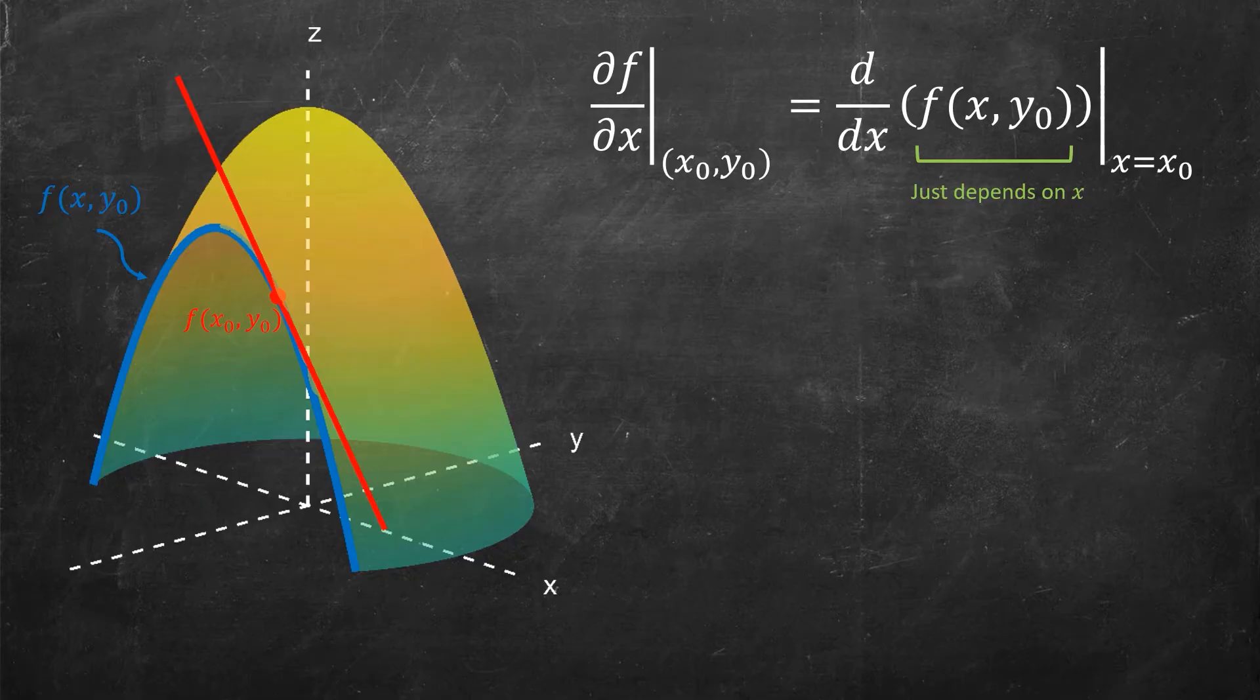And so I can take the derivative using the old d/dx notation we used in one dimension, it perfectly applies. Finally, they used the long vertical bar to evaluate it at x equal to x₀. So the idea is that I have defined the partial derivative of a multi-variable thing to simply be the original single variable derivative when I plug in the value y₀.